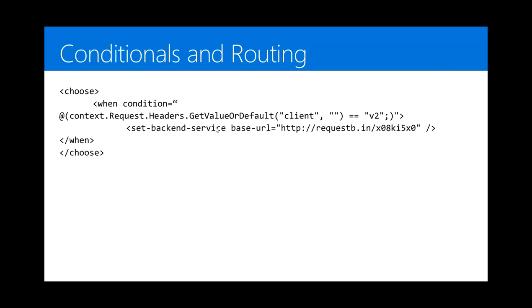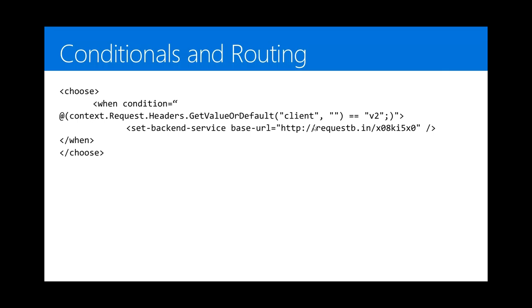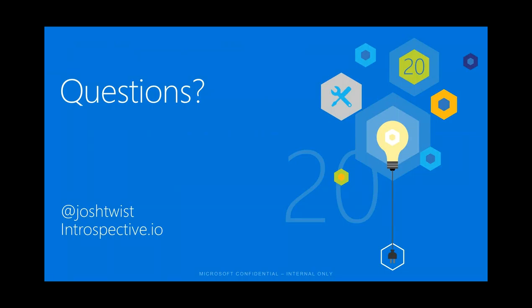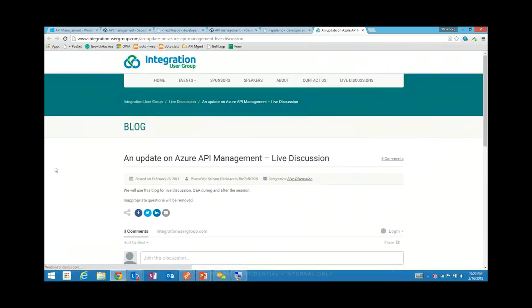We also have conditionals — you can now say: apply a policy only if a certain condition is met. For example, apply a policy only if the header called 'client' is 'v2'. This is where you get your versioning story — that special routing story. With the next statement, 'set backend service,' which is a new policy, we actually change the backend it goes to, creating a dynamic routing engine that opens up a lot of really interesting scenarios. So if we get a client that's v2, send it to this different backend; if not, it goes to the default backend or you can do something else. You can set up conditionals, use expressions to execute code, and use set backend service to change the backend URL that's going to be invoked. That's something we have in our labs now — I'd love some feedback.